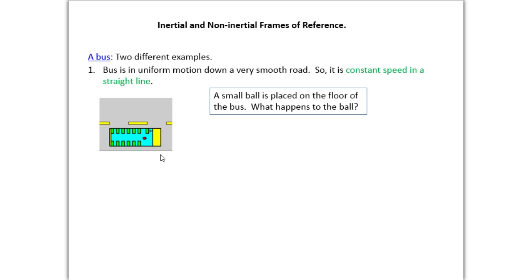Okay, so inertial and non-inertial frames of reference. A bus, and there's two different examples here. A bus is in uniform motion down a very smooth road, so it's at constant speed in a straight line. Okay, so here's your bus, and it's moving down the road in straight motion. A small ball is placed on the floor of the bus. What happens to the ball?